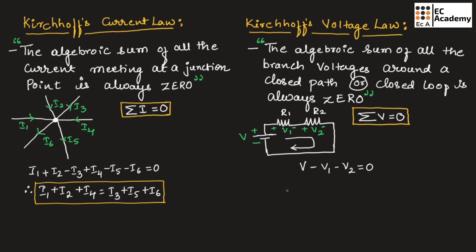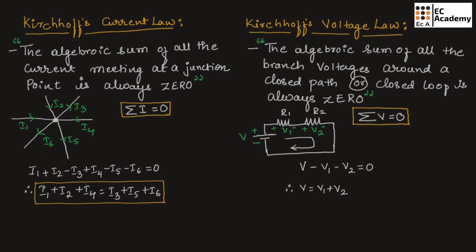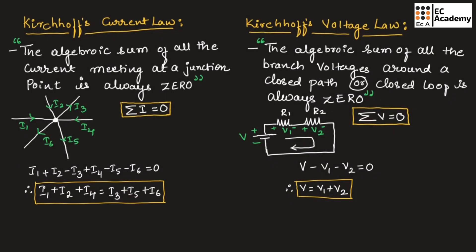From this equation, we can write V = V1 + V2. This is about Kirchhoff's Current Law and Kirchhoff's Voltage Law. Hope you have understood the topic. Thank you.